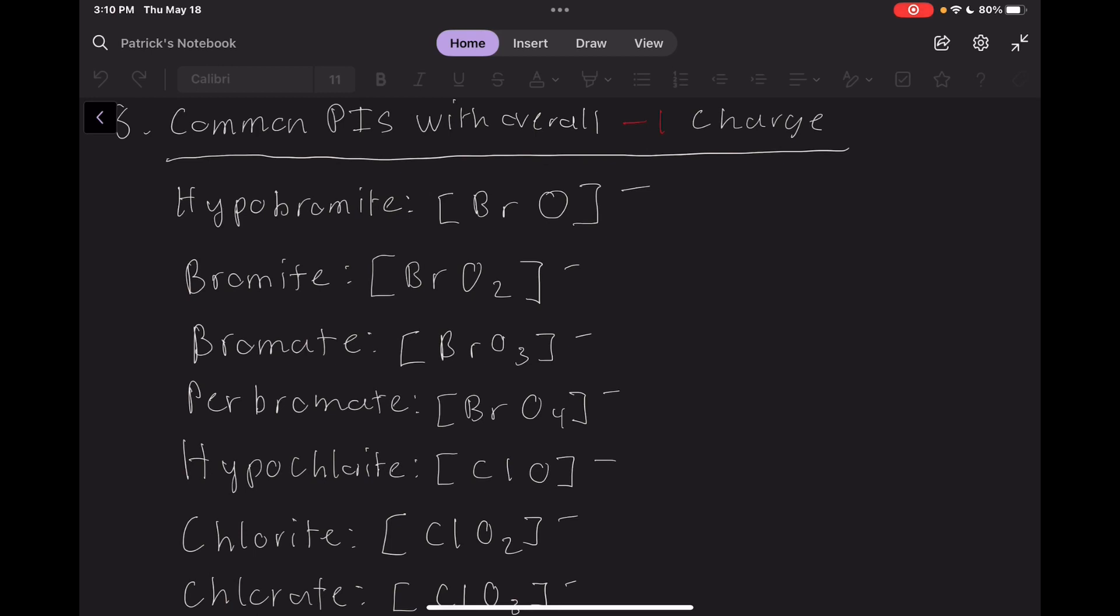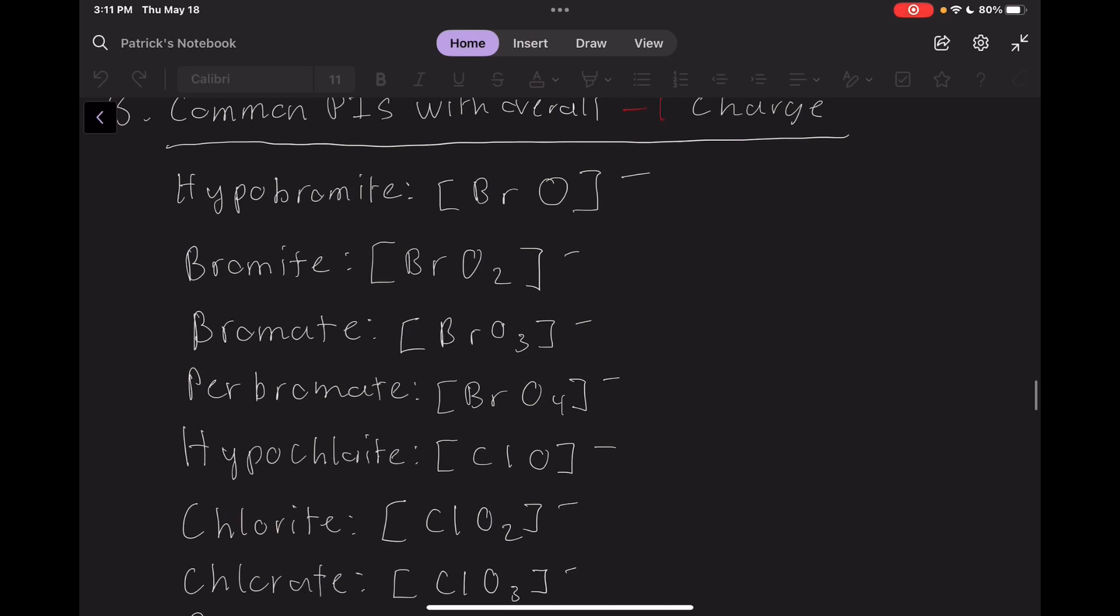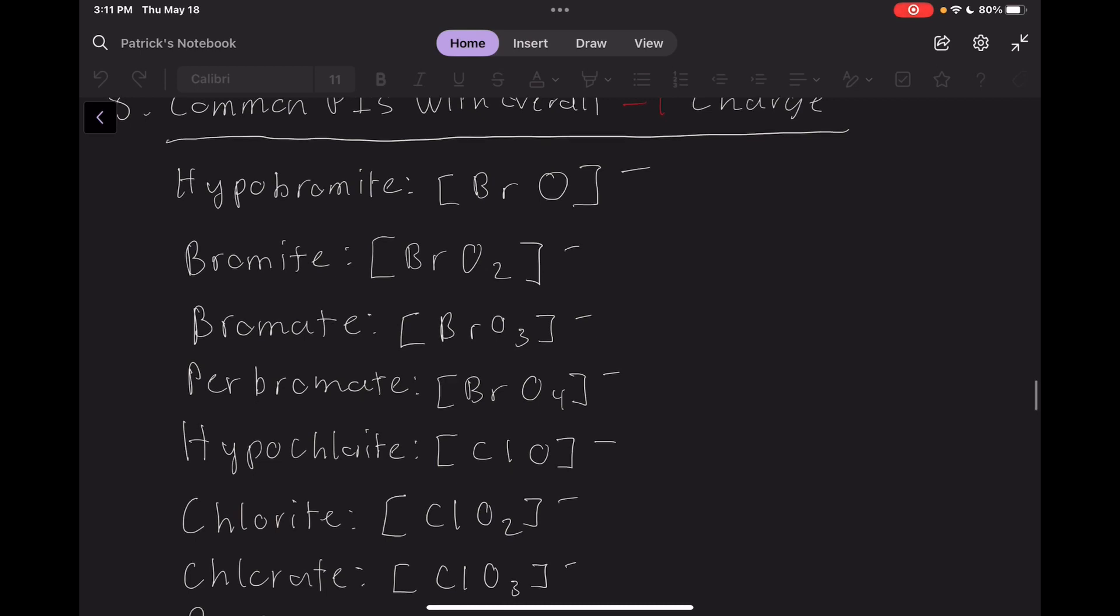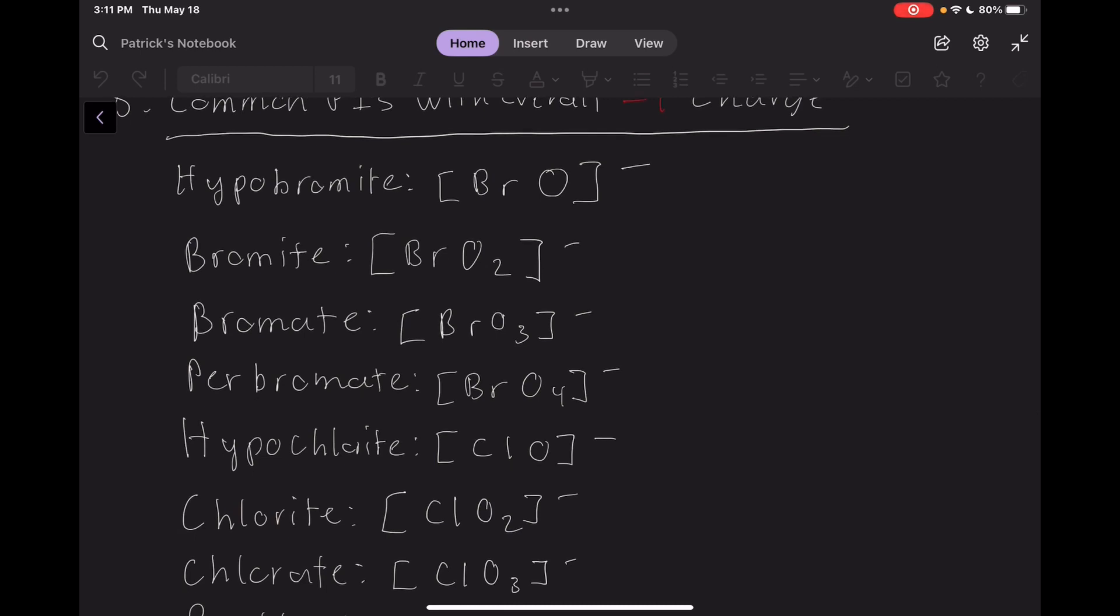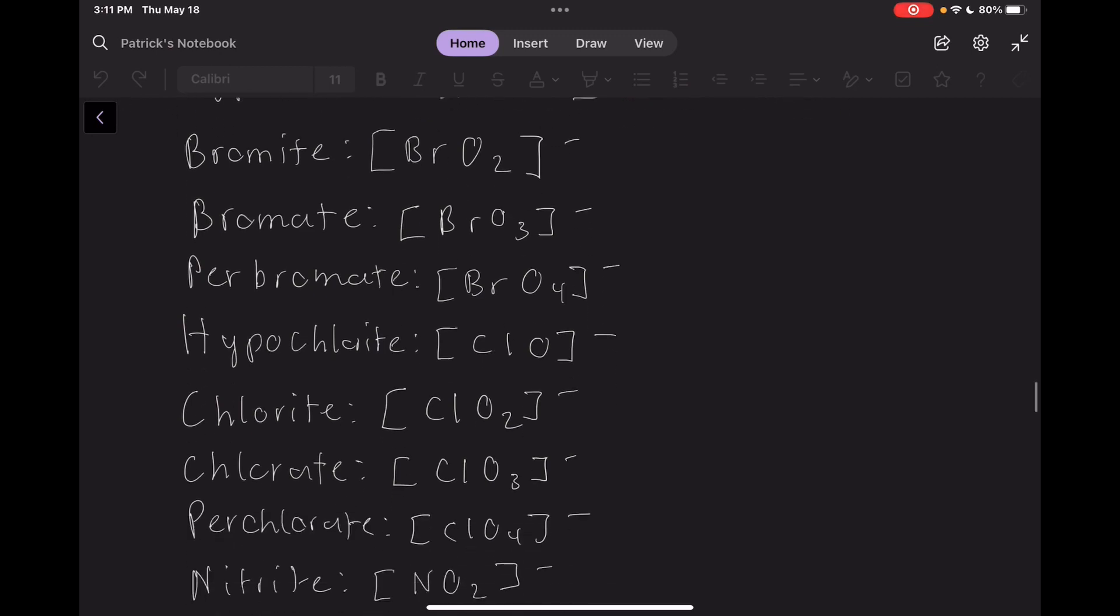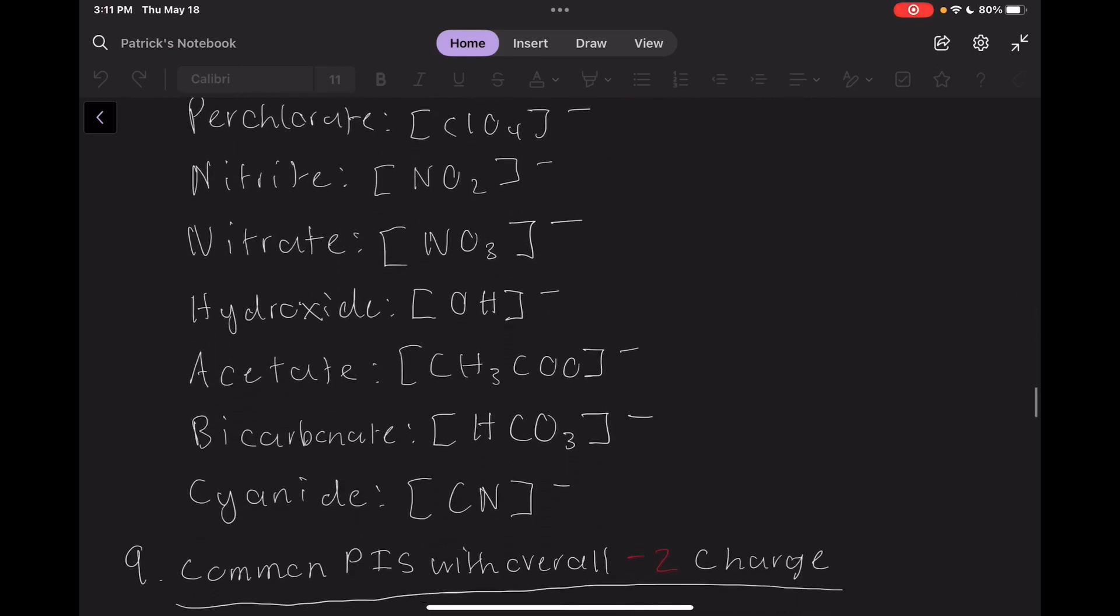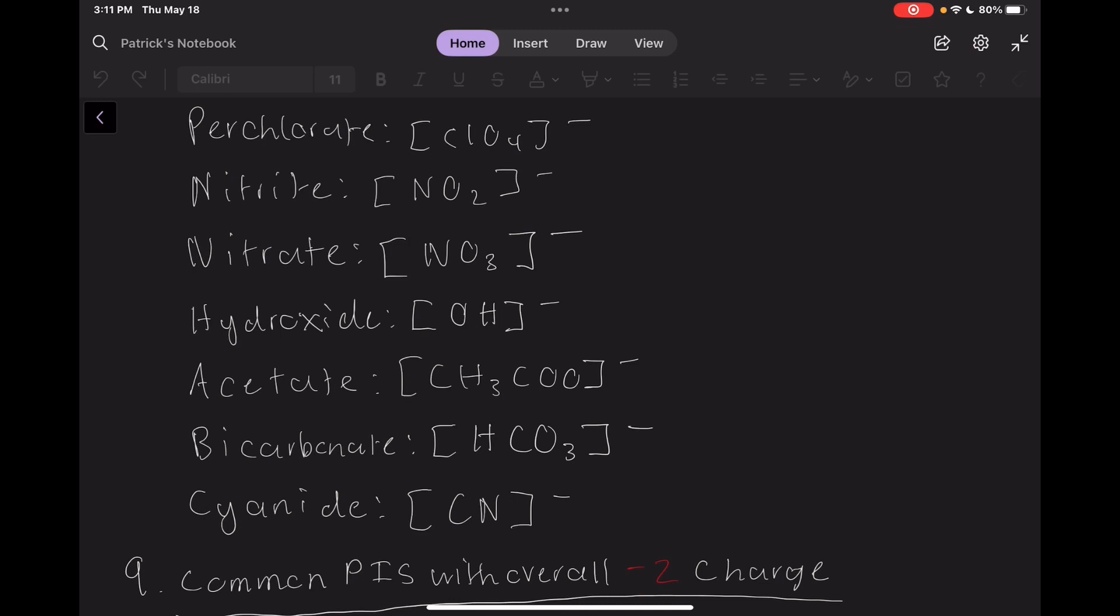Down here, we have some polyatomic ions with an overall charge of negative 1. This table is the biggest by far, since there's quite a few polyatomic ions with a negative 1 charge. I'll scroll down in just a minute. There, that's the rest of them.